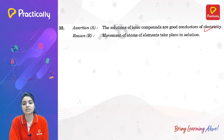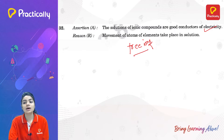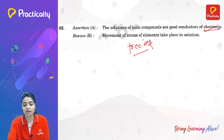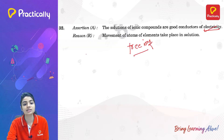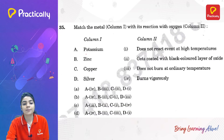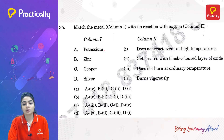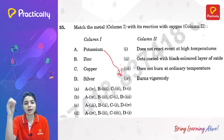Assertion — a solution of an ionic compound is a good conductor of electricity — is true. Reason — movement of atoms of the element takes place in solution — is false, because it is the movement of free ions (not atoms) that helps in the conduction of electricity. Again, assertion is true but reason is false, so option C is the correct answer.